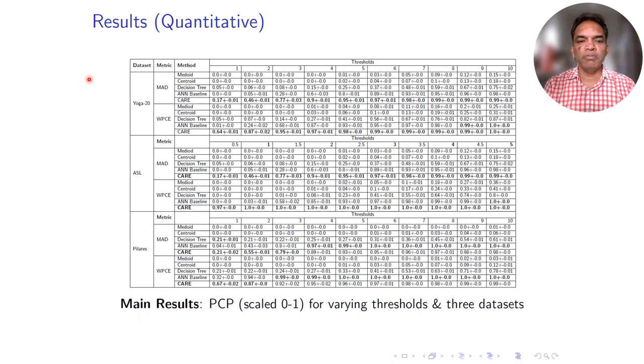Here we report the PCP metric at various error thresholds varying from one to ten. We have three datasets—two fitness datasets, Pilates and Yoga 20, and ASL American Sign Language, which is hand gestures. As you can see, CARE not only outperformed across all baselines, but it has done really well for ASL, which indicates that our method is generalizable across beyond fitness into ASL and other domains.